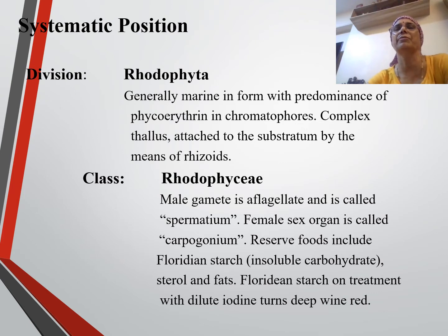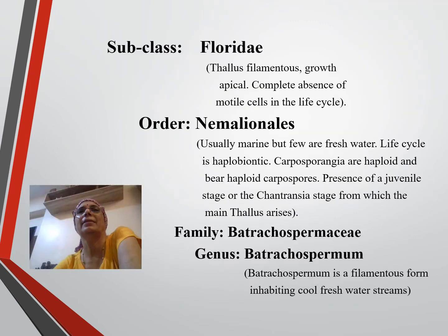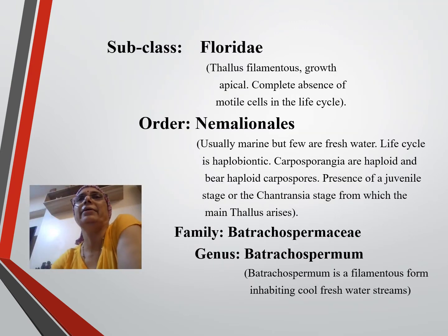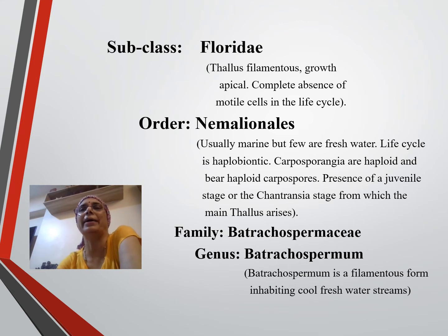Floridean starch, when treated with iodine, turns deep wine in color. Subclass Florideae: thallus filamentous, growth apical, complete absence of motile cells in the life cycle.